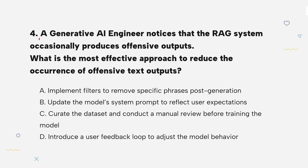Question 4: A generative AI engineer notices that the RAG system occasionally produces offensive outputs. What is the most effective approach to reduce the occurrence of offensive text outputs?